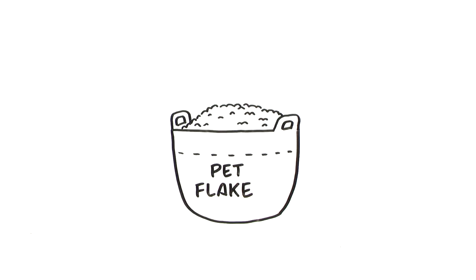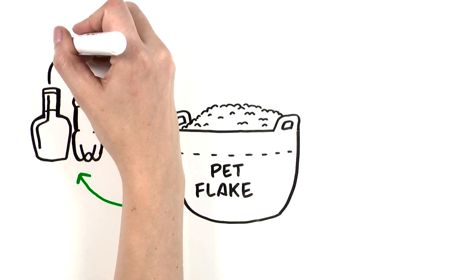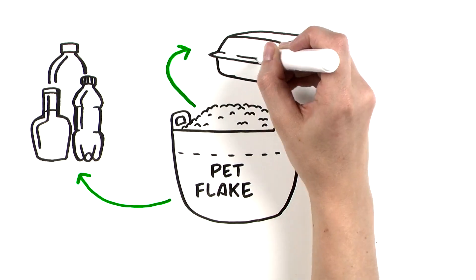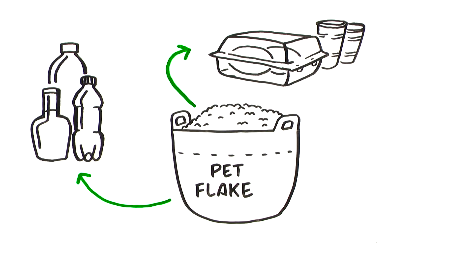Where does it go? It may become more highly refined PET pellet for new bottles, or extruded into PET sheet and formed into clamshells, trays, cups, and other thermoformed products.